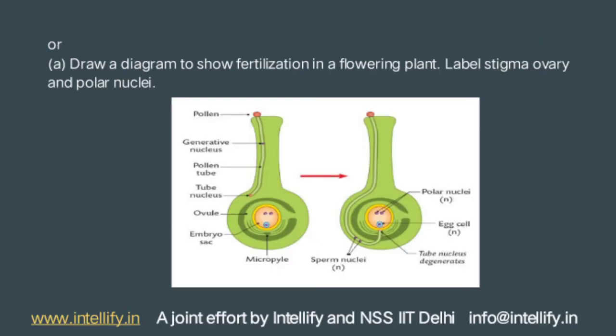A. Draw a diagram to show fertilization in a flowering plant — label stigma, ovary, and polar nuclei. Fertilization is a process of sexual reproduction in plants, which occurs after pollination and germination. In the fertilization process, flowers play a significant role as they are the reproductive structures of angiosperms. Male gametes get transferred into the female reproductive organs through pollinators. The pollen grains germinate after pollination of the carpel and grow into the style, creating a pathway for the pollen grains to move down to the ovary.